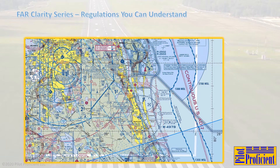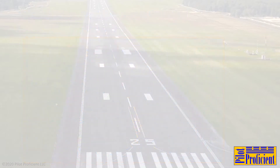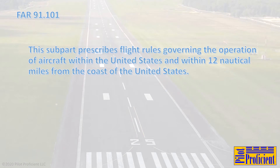Welcome back to the FAR Clarity Series. We're talking about 91.101, Applicability. This subpart, meaning subpart B, flight rules, prescribes flight rules governing the operation of aircraft within the United States and within 12 nautical miles from the coast of the United States.